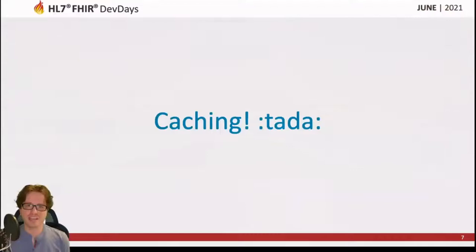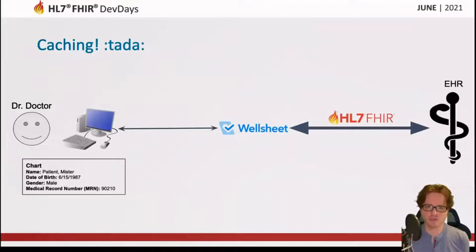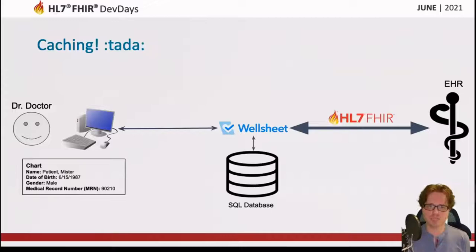Caching was the first thing we did to solve this problem. Instead of going directly to the FHIR APIs on every request, we cached the data in our Wellsheet server — specifically in our SQL database, since we use SQL for all our other application data, so it made perfect sense to start caching there as well.